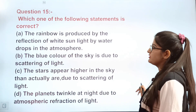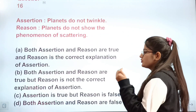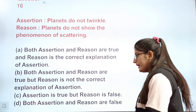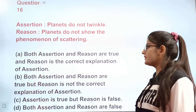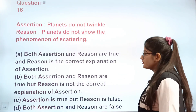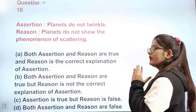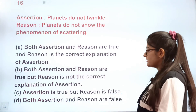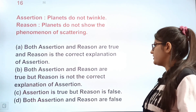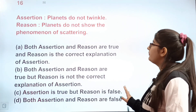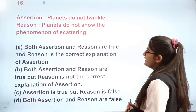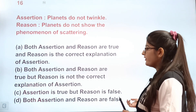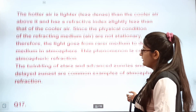Question 16 is an assertion-reason question. Assertion: Planets do not twinkle. Reason: Planets do not show the phenomenon of scattering of light. The assertion is true — planets do not twinkle — but the reason is false. The correct answer is C: assertion is true, reason is false.